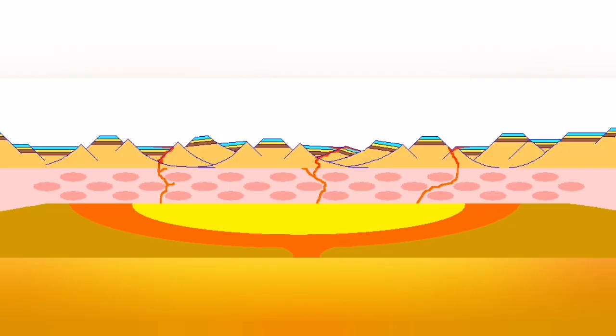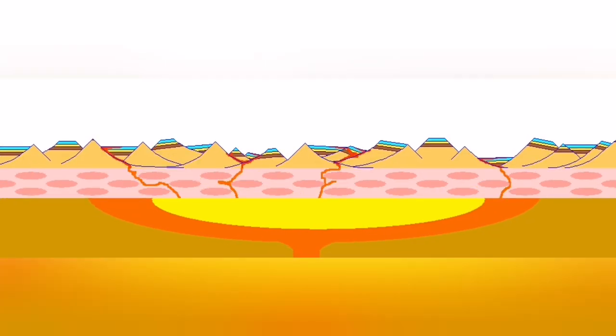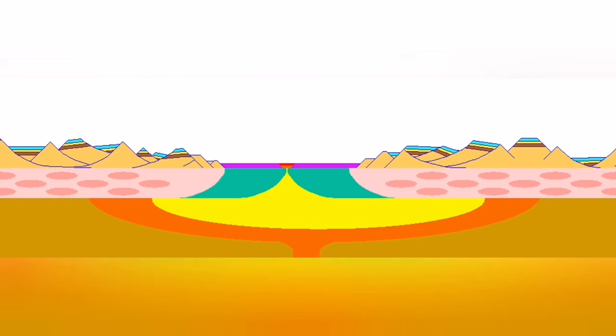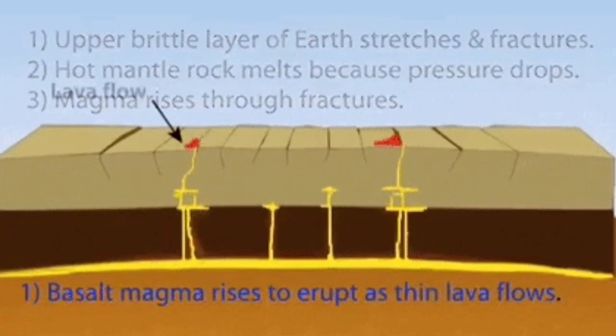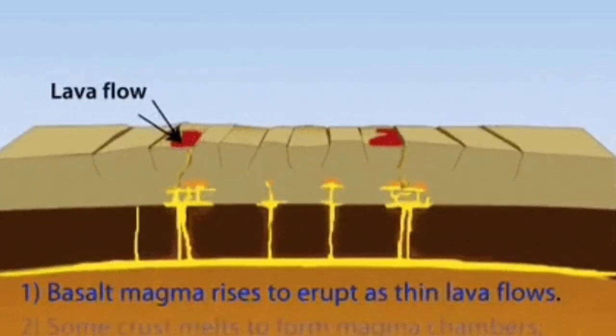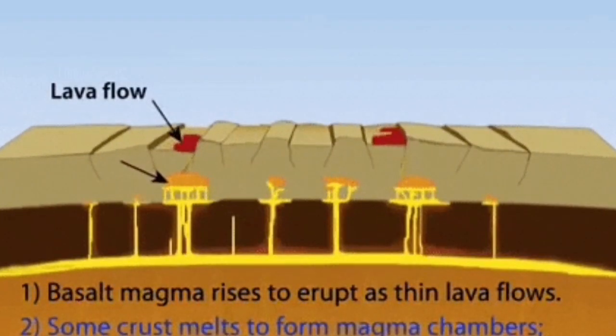Magma fills the gap created simultaneously, so there is practically no gap. The eruptions in Iceland are of this type. In the Red Sea, the Afar Triangle, and the Rhine Valley in Germany, we have similar examples.